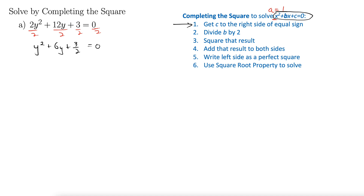Step 1: get the c term to the right side of the equal sign. So I'm subtracting 3 halves from both sides. That gives us y squared plus 6y equals negative 3 halves on the right.